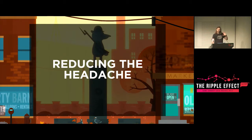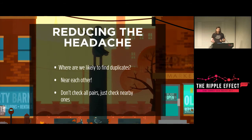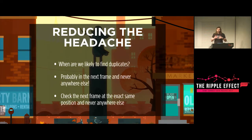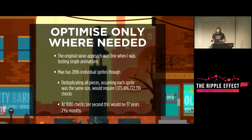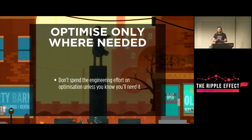There are ways to reduce this headache. We can be smarter and only check nearby things — it's unlikely the far left contains a chunk identical to something on the far right. We can also check across time, only comparing a point with the next frame since two frames later things will be quite different. You should only do this kind of optimization work if you find it necessary — my original naive approach works fine for testing simple animations, like processing a run animation in about five minutes. Don't spend engineering effort on optimization unless you know you need it, because it's easy to fall down the rabbit hole of always making your tool better.